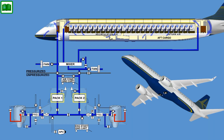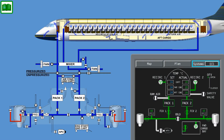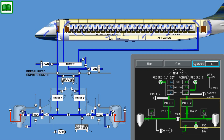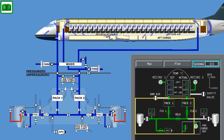The two ECS packs are installed in the wing-to-fuselage fairing. The AMS controller controls the bleed airflow to each pack independently through the respective pack flow control valve. During normal operation, engine number one supplies bleed air to pack one, while engine number two supplies bleed air to pack two. Via cross-bleed, a single bleed source can supply both ECS packs, and a single pack is capable of keeping adequate cabin cargo hold pressurization and temperature.